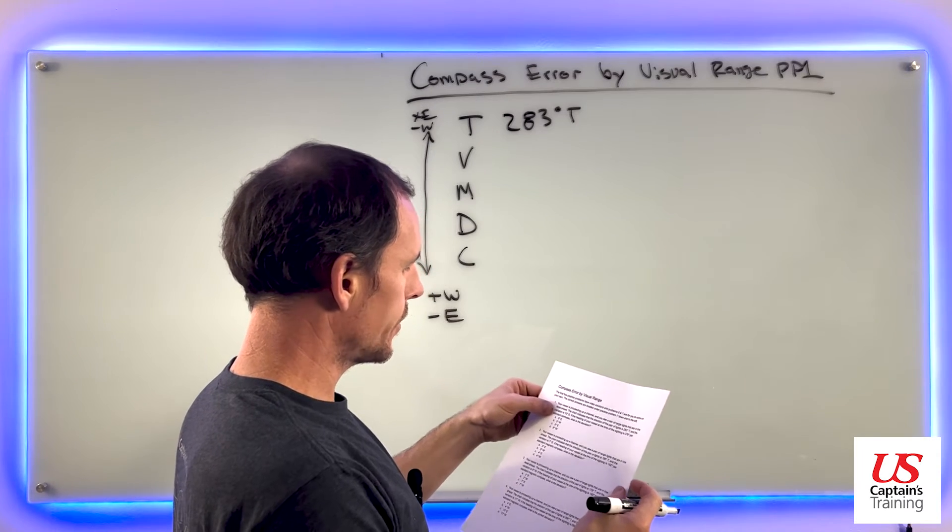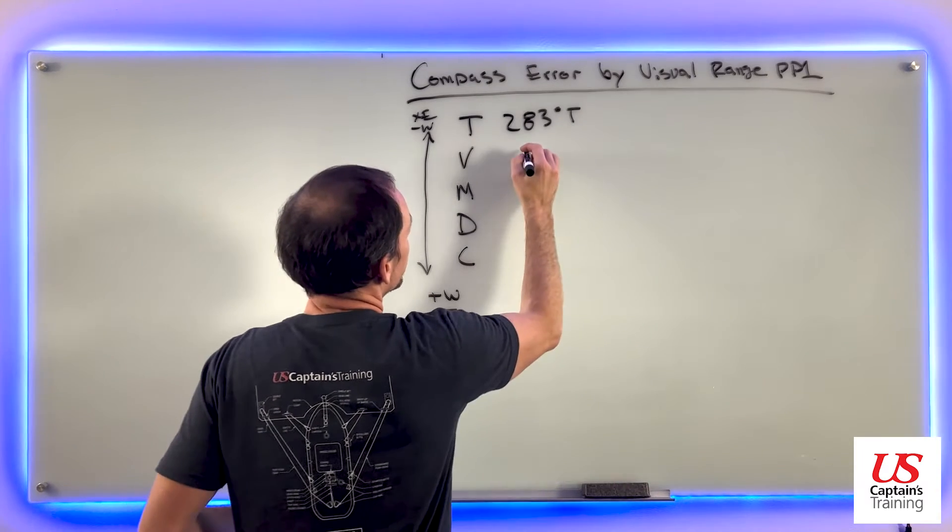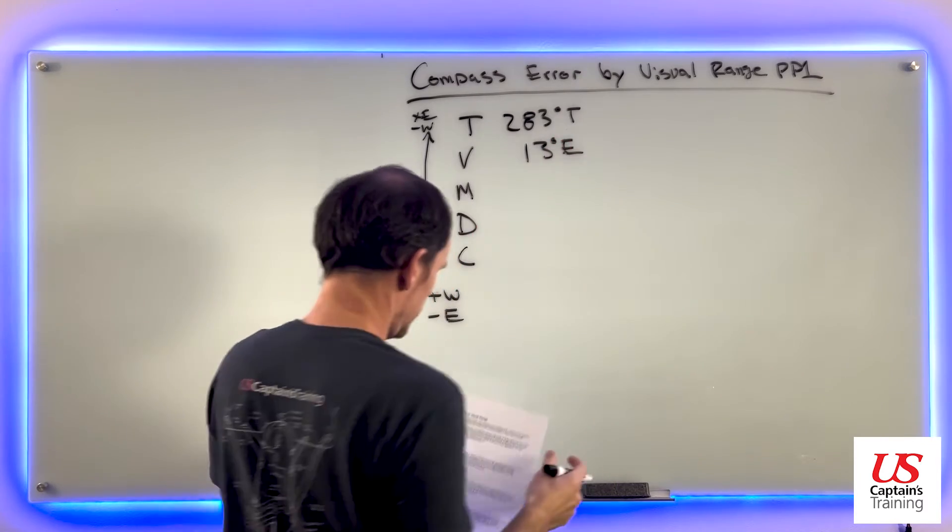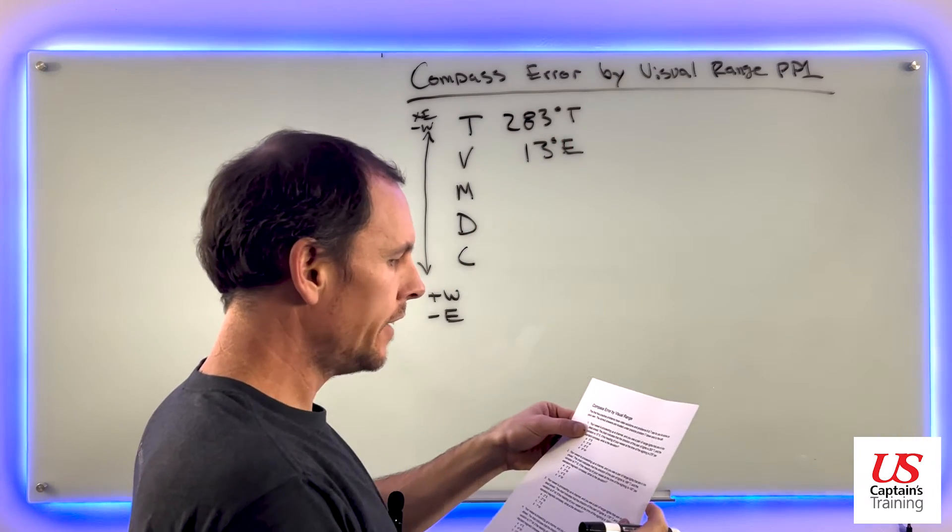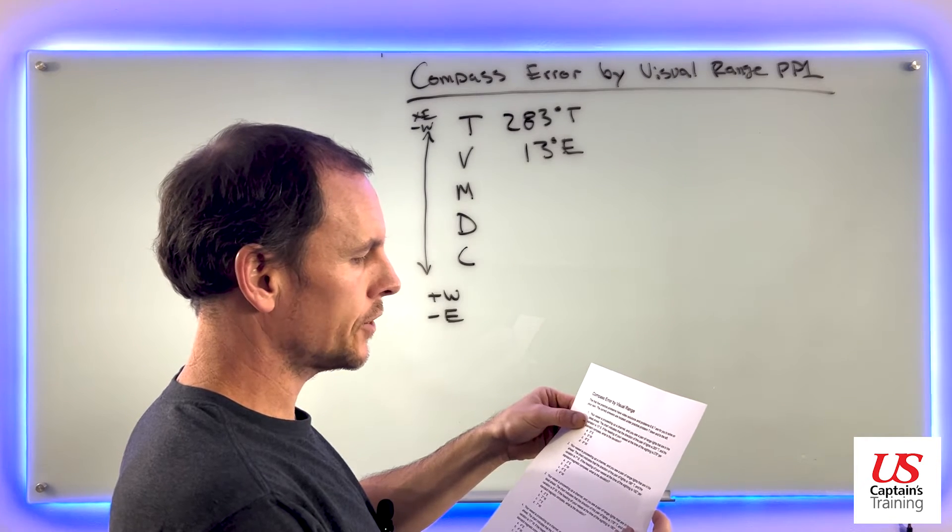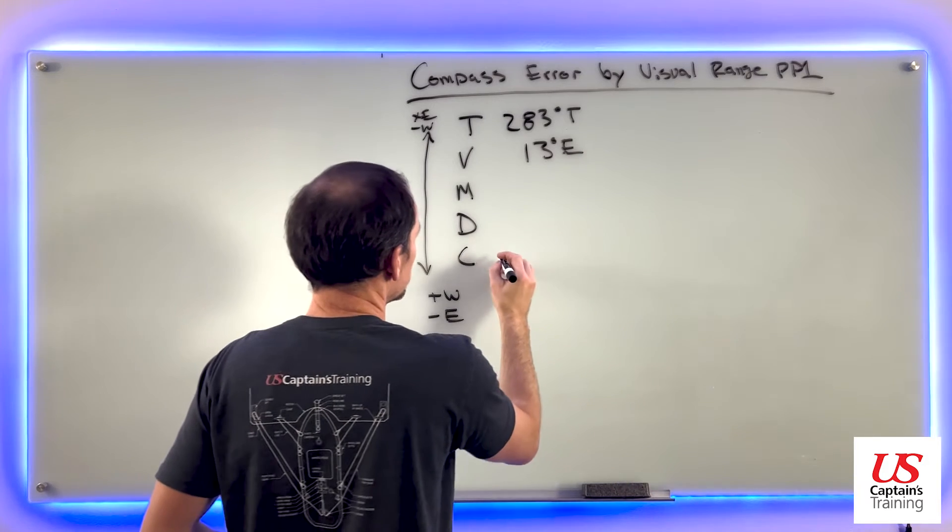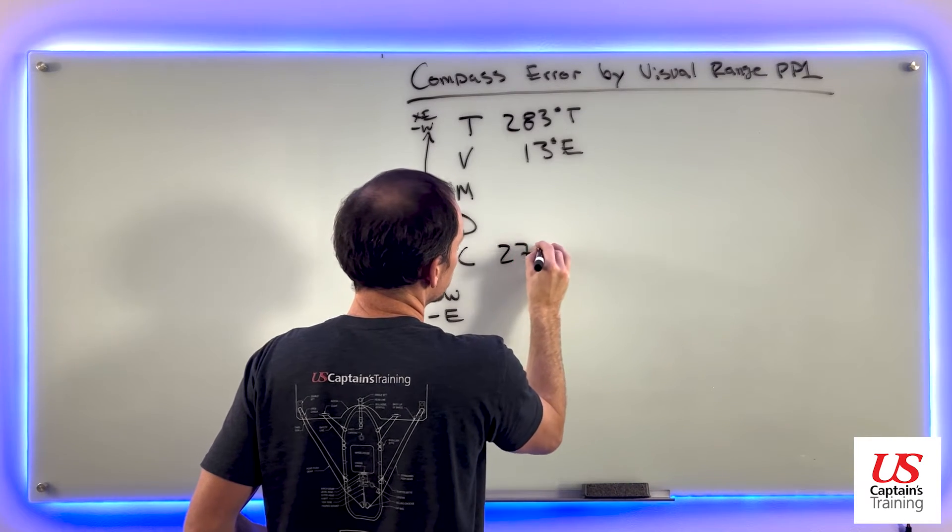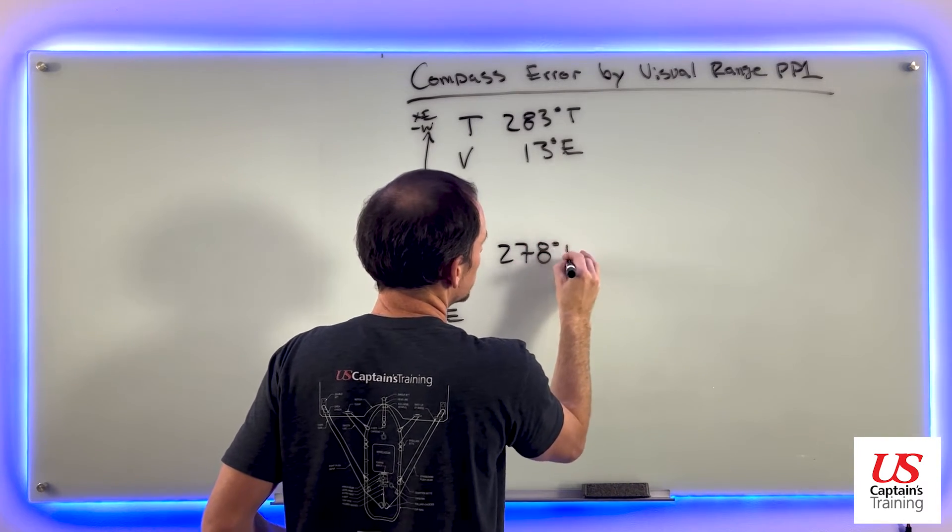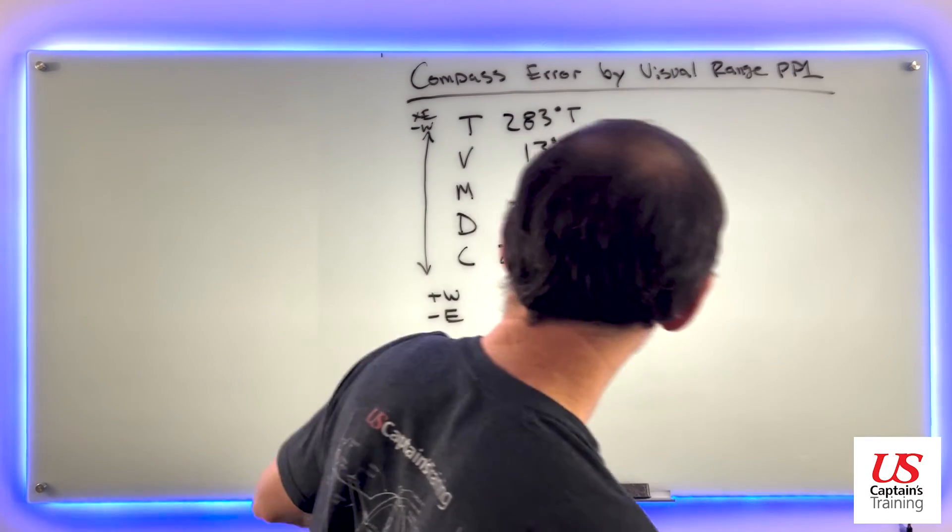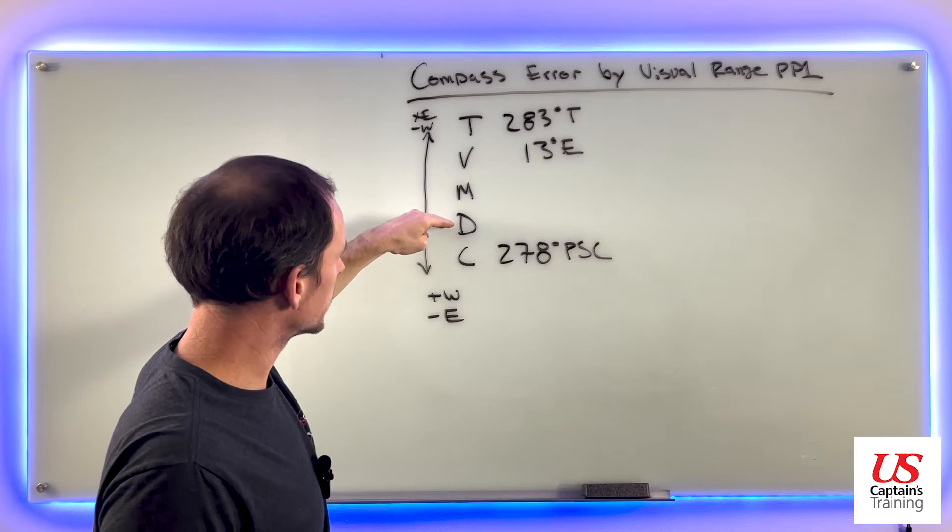The variation is 13 degrees east. If the heading of your vessel at the time of the sighting is 278 per standard compass, what's the deviation? So 278 degrees PSC, and it asks what is deviation.